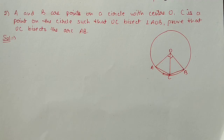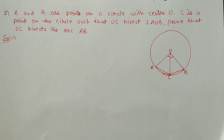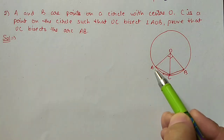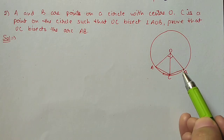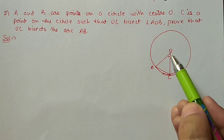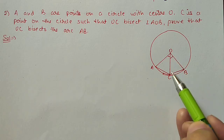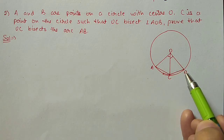Now question number 2: A and B are points on a circle with center O. C is a point on the circle such that OC bisects angle AOB. Prove that OC bisects the arc AB. The figure shows points A and B on the circle, and OC bisects this angle.